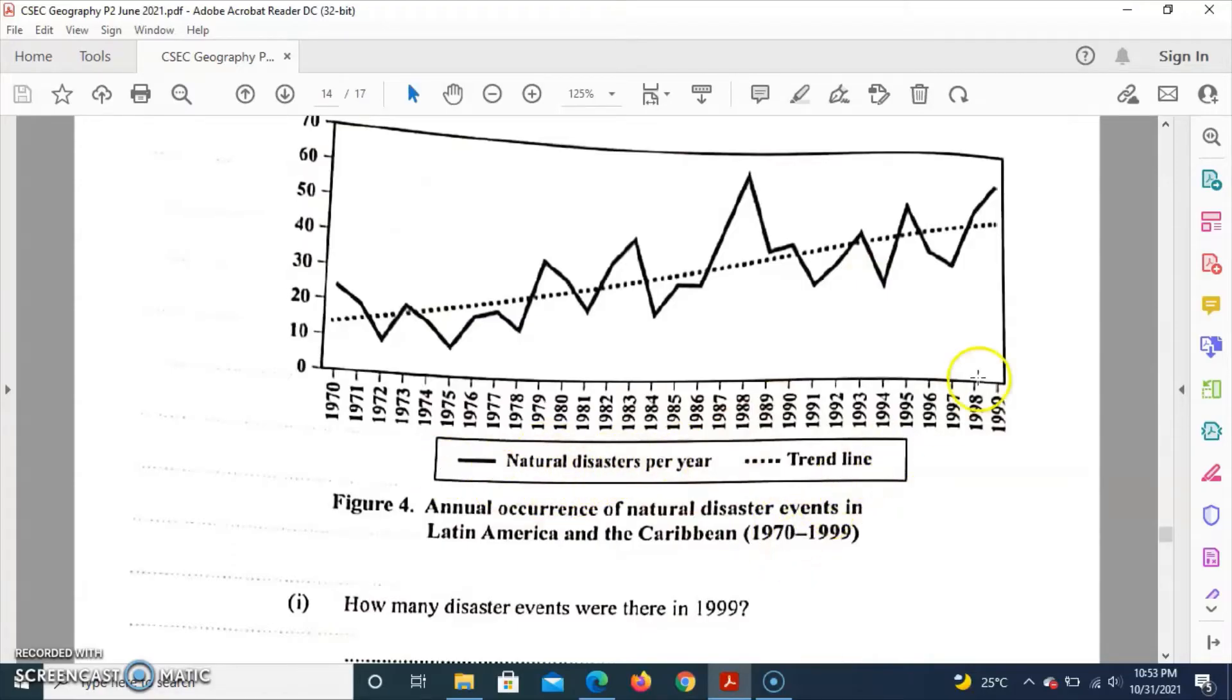So based on the key, natural disasters per year is the bold line. In 1999, you go all the way up, it meets here, you go across. When you go across you should be getting 61, so there are 61 natural disaster events in 1999.